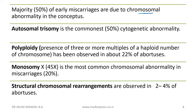Monosomy X (45,X) is the single most common chromosomal abnormality in miscarriages. Regarding polyploidy, we have triploidy as well as tetraploidy, with triploidy being more common. Finally, we have structural chromosomal rearrangements, observed in 2–4% of abortions, including translocation, deletion, inversion, and ring formation.